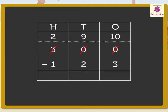Now subtract the ones, that is, 10 minus 3 is equal to 7. Subtract the tens, that is, 9 minus 2 is equal to 7. Lastly, subtract the hundreds, that is, 2 minus 1 is equal to 1. So we get 300 minus 123 is equal to 177.